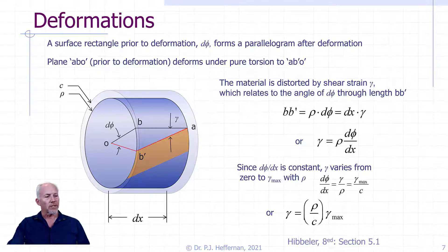So rho over C, think of it, rho is a value from the longitudinal axis out to a value of C when it gets to the extreme fiber on the outside. And so this is a ratio, rho over C is a ratio between zero and one. And so we're getting this linear variance of the shear strain, zero at the center, and a maximum at the outside.